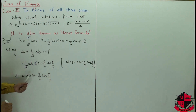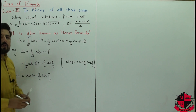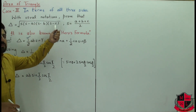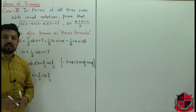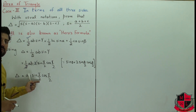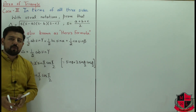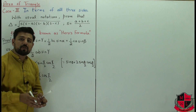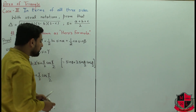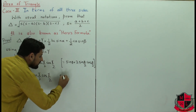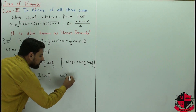Now to express Hero's formula in terms of the sides, we use the half-angle formulas. These half-angle formulas give sine and cosine of half-angles in terms of the sides of the triangle, which we derived earlier. We need to apply those now for sine of gamma over 2.